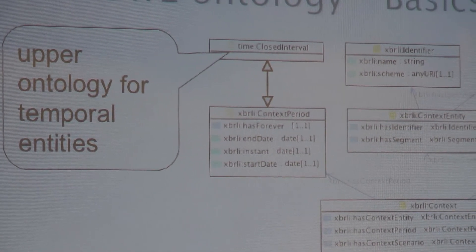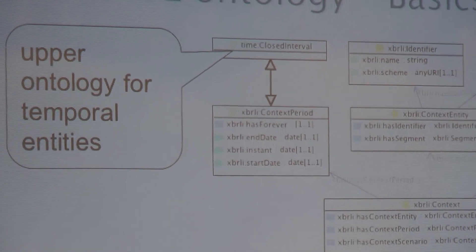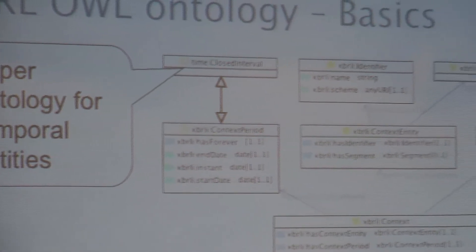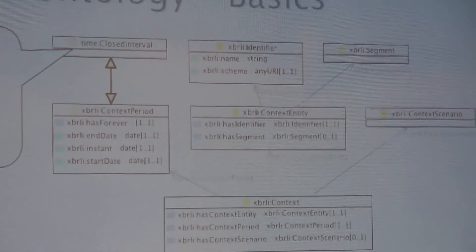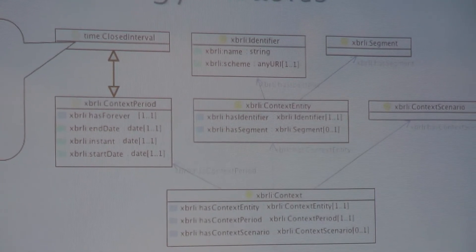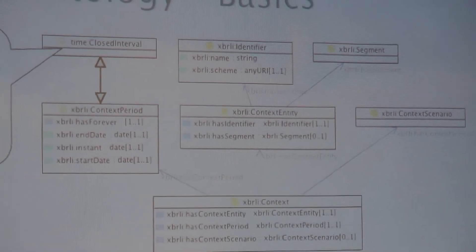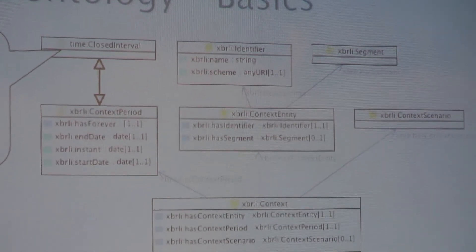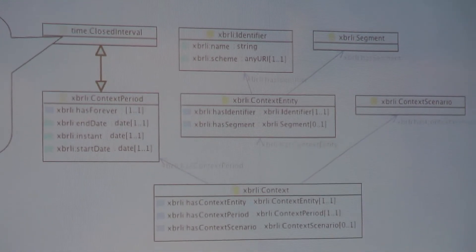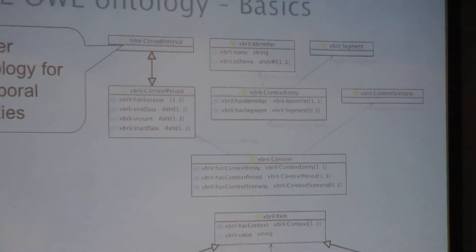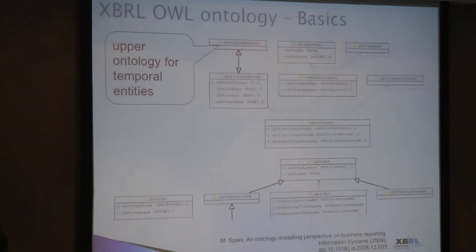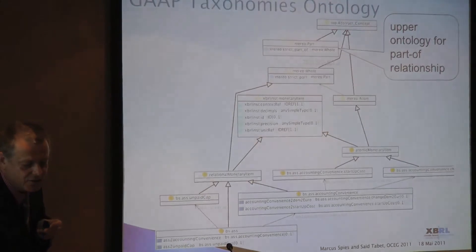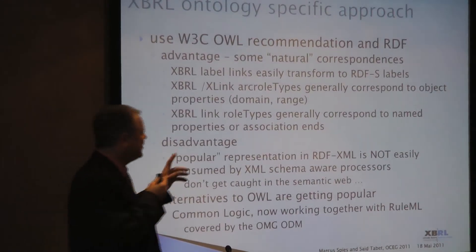An upper ontology is a general framework for reasoning about a domain. For instance, you can use an upper ontology for temporal relationships — just like taking a library in C++ or Java. Once you do this, your whole XBRL representation is enabled for temporal reasoning: what happened during overlapping periods, non-overlapping periods, successive periods, and so on. This capability is immediately available once you use this basic ontology construct.